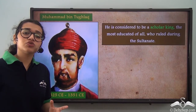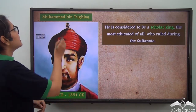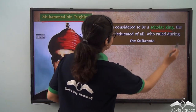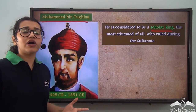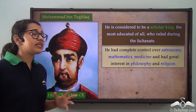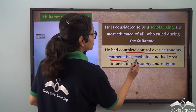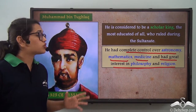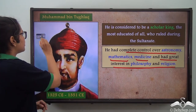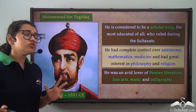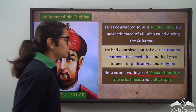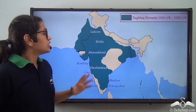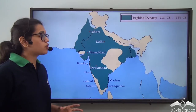After the death of Giyasuddin Tughlaq, his son Muhammad bin Tughlaq came to power. He is considered to be a scholar king — the most educated one amongst all. It is said that he had complete control over astronomy, mathematics, and medicine, and had great interest in philosophy as well as religion. He was also an avid lover of Persian literature, fine arts, music, and calligraphy. This is how India looked under the Tughlaq rule.